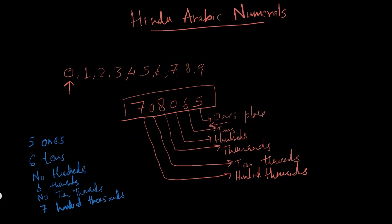How are you going to write this numeral into words? It's pretty simple. You're going to write this as seven hundred eight thousand sixty-five. I'm going to show you how.